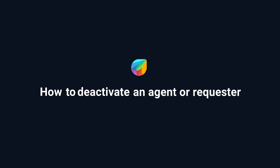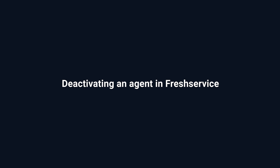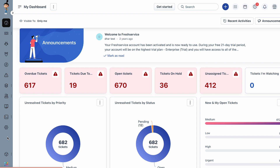In this video, we will learn how to deactivate or delete an agent and a requester in Freshservice. You can delete an agent by choosing the deactivate agent option or the forget user option. We can have a look at the impacts and implications of selecting these options in the next section.